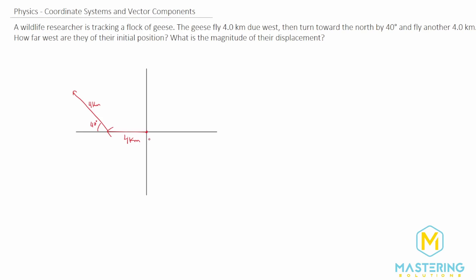First, let's figure out how far west they are from their initial position. To understand what that means — they're right here, and we need to figure out how far this way they went. We already know a portion of it: 4 kilometers. We need to figure out this component right here, which is the x-component. The vertical component is the y-component, and we've drawn a right triangle.